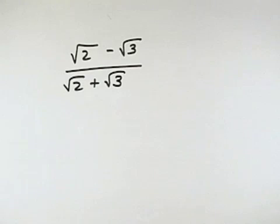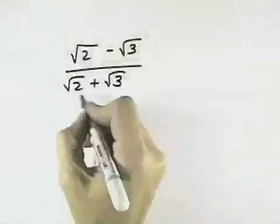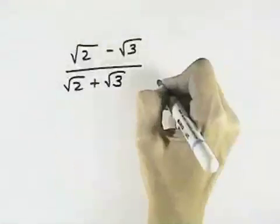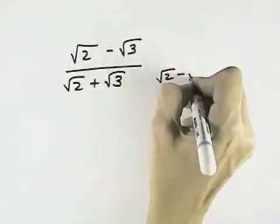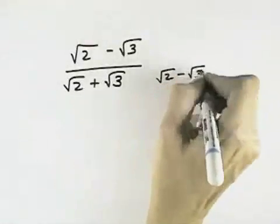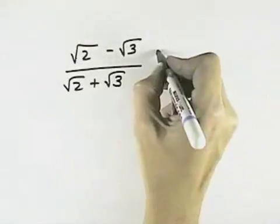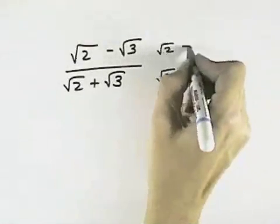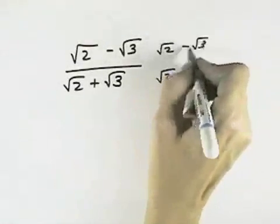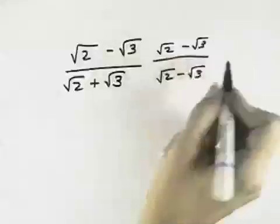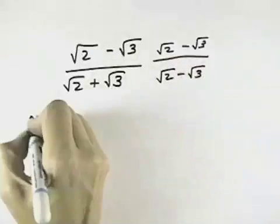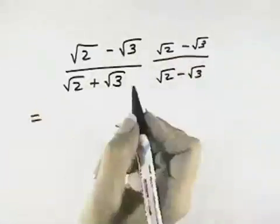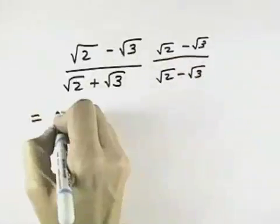Here I want to rationalize the denominator. Since there's two terms, I'll have to multiply by the same two terms, but with the opposite sign in between. So I'm multiplying the numerator and the denominator by the conjugate. What that will do is eliminate my middle terms, which will have radicals, as we'll see in a minute.